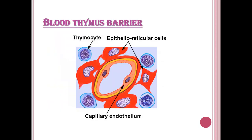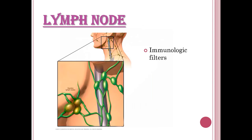The blood-thymus barrier consists of layers including epithelio-reticular cells and capillary endothelium surrounding the lumen. The lymph node acts as an immunologic filter, filtering antigens, cell debris, and wear-and-tear materials, clearing them from the body.